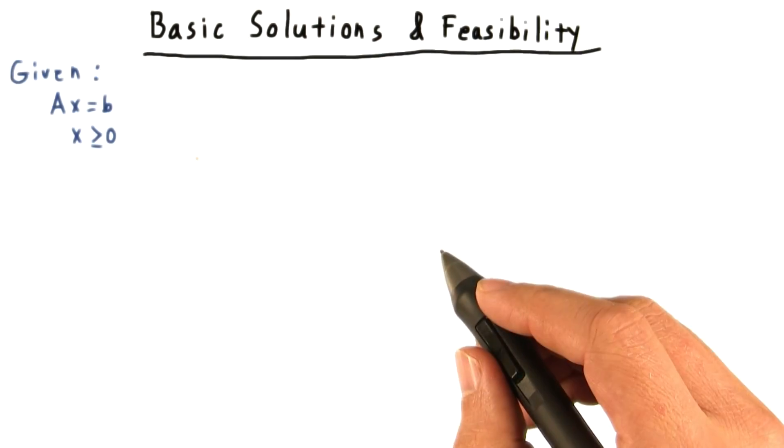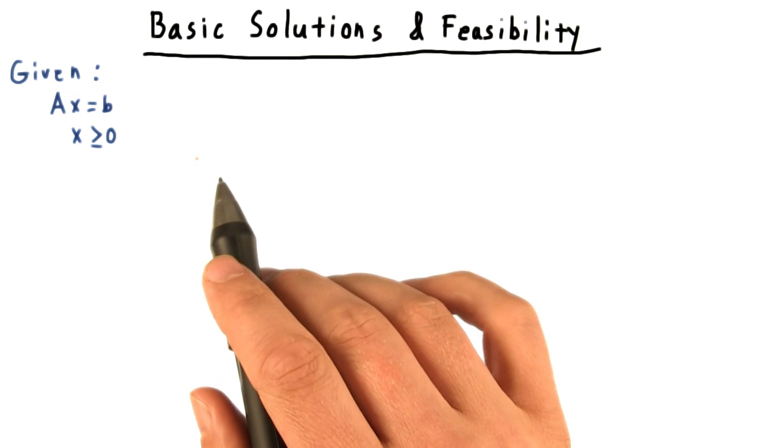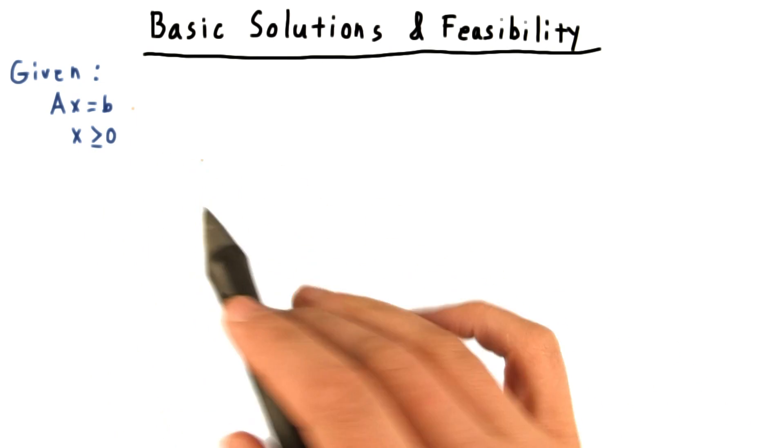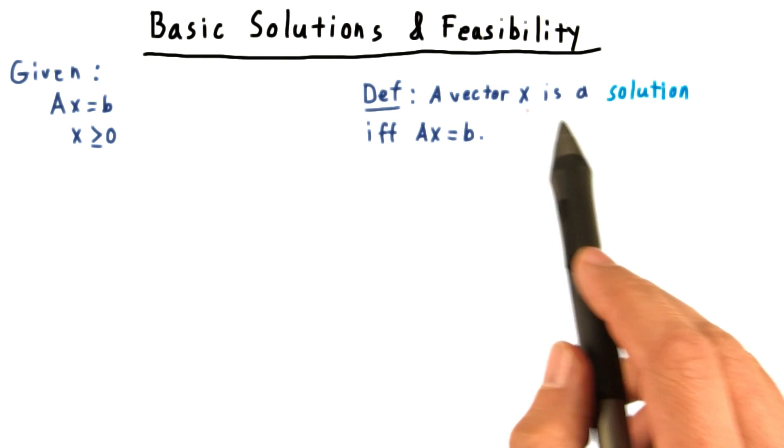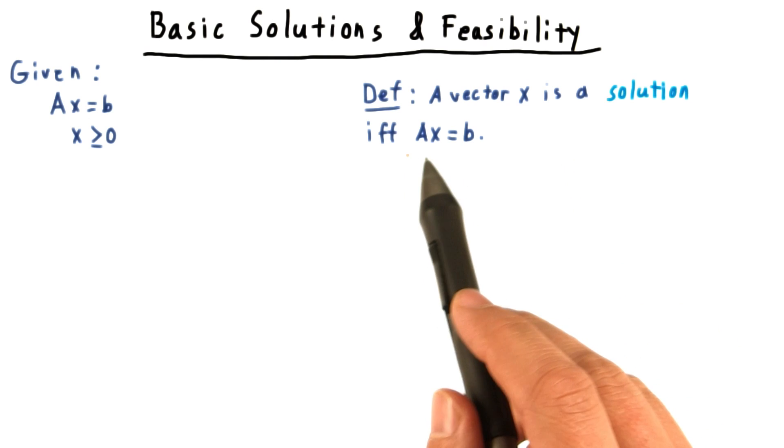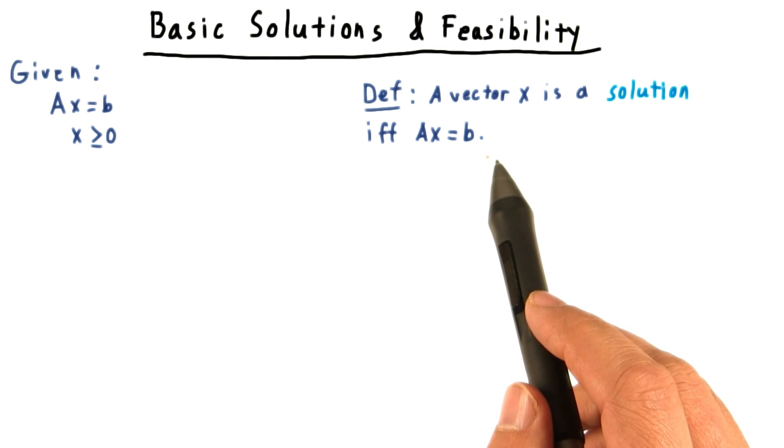Switching over now entirely to considering linear programs in standard form, I want to define some vocabulary that will be useful going forward. First, we say that a vector x is a solution if and only if Ax is equal to b.